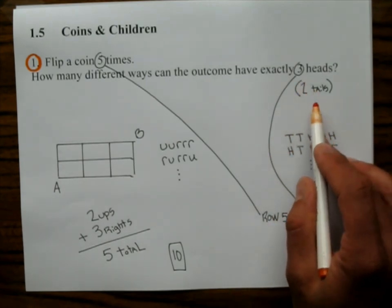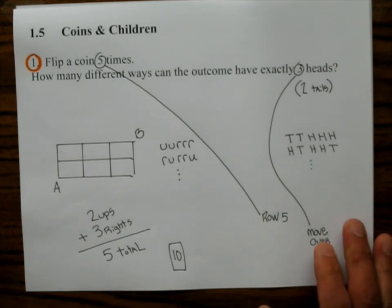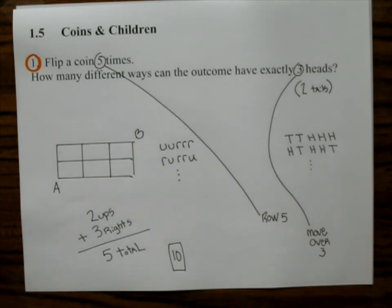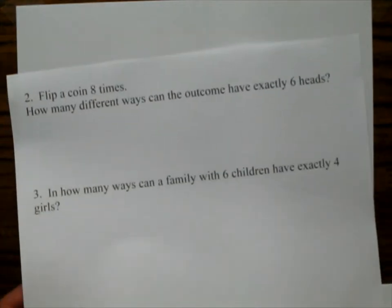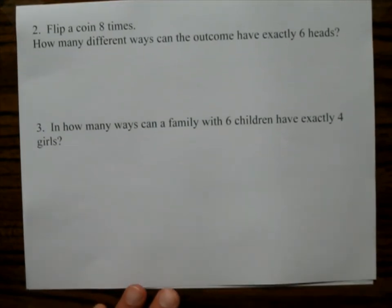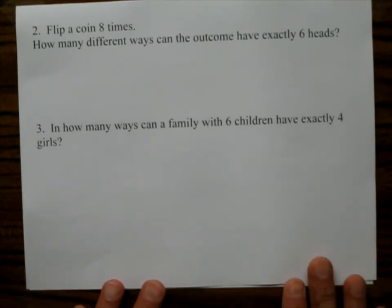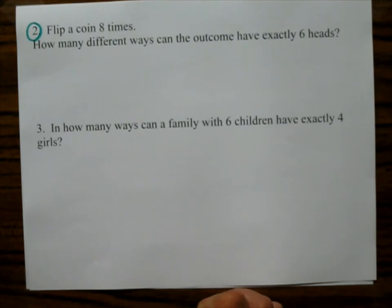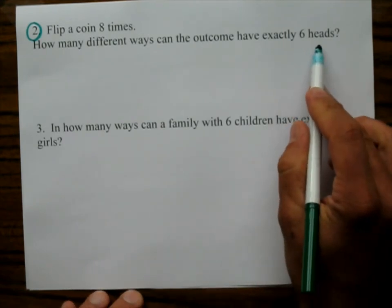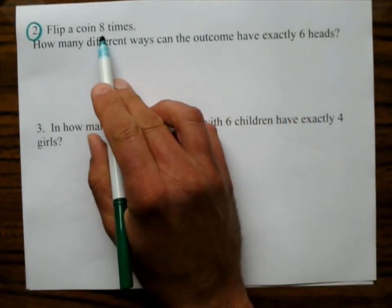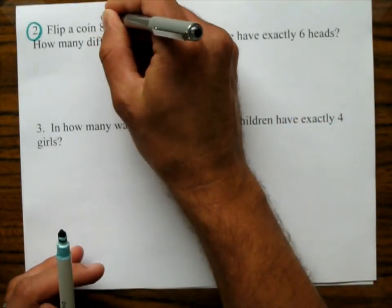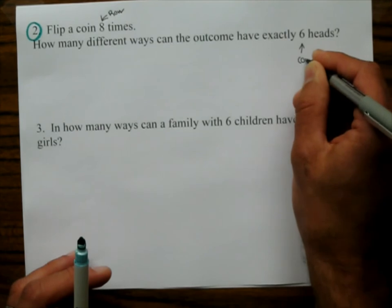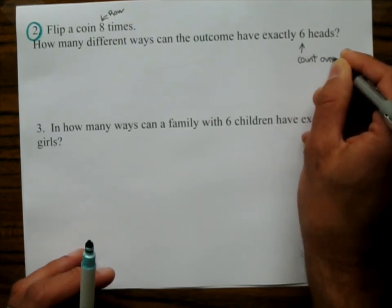When you do your homework in one point five, once again, it should not take a long time. Let's go ahead and do two more problems from one point five. Flip a coin eight times. We're going to circle this one in green. How many different ways can the outcome have exactly six heads?